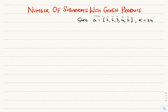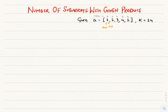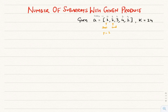Initially, both start and end point to the beginning of the array, that is index 0. I'm going to use a variable p which will hold the product for that particular window. So in the current window, the product p will be 1. I have to keep incrementing the end pointer till p is less than k. So as p is less than k in this case, I'll increment end. End will point to 2 and p will become 1 × 2 = 2.